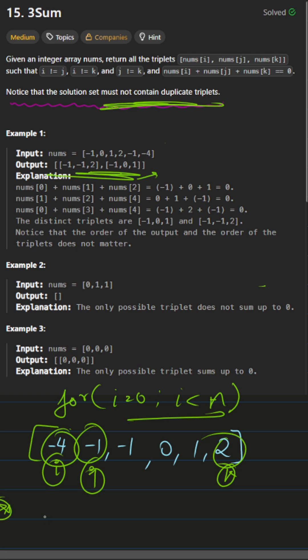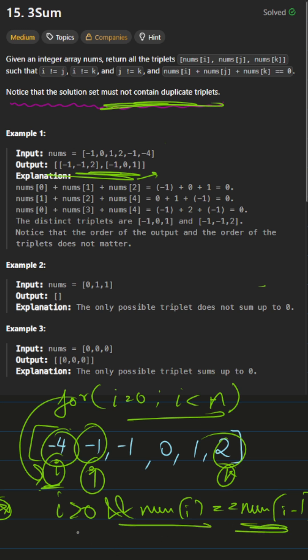Now the important part of this question is how do we deal with the duplicates? So when we are running the for loop with the ith index, we'll check if i is greater than zero and if nums of i equals nums of i minus one. If the ith element is equal to i minus one element, then we'll simply continue and skip this whole iteration. That is one thing we'll do for skipping the duplicate elements.